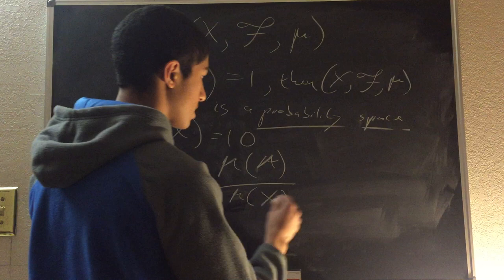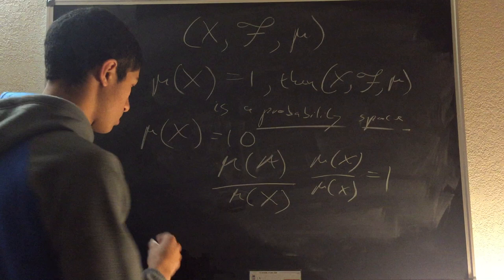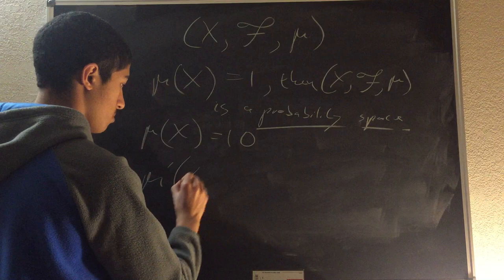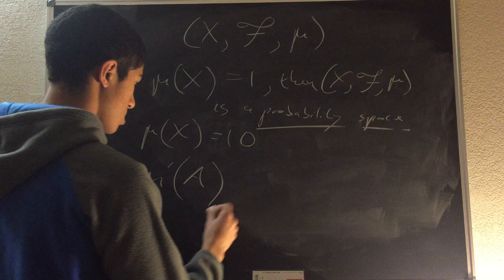What this does is: if we took the measure of X divided by the measure of X, that equals 1. So we can define a new function mu prime, called a probability measure, such that mu prime of some set A in our sigma-algebra is equal to the measure of A divided by the measure of the set X which contains it.